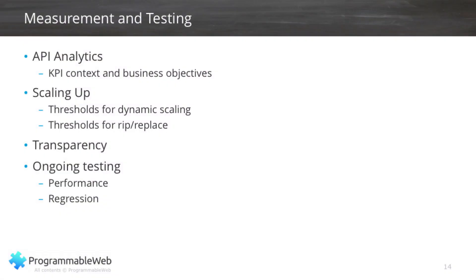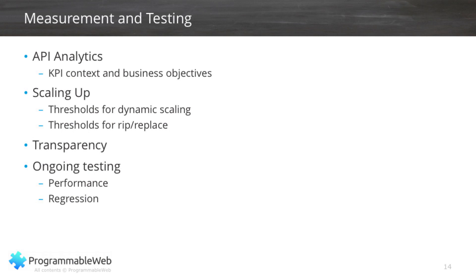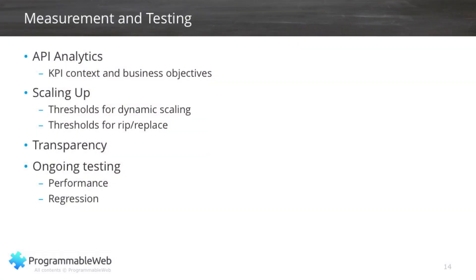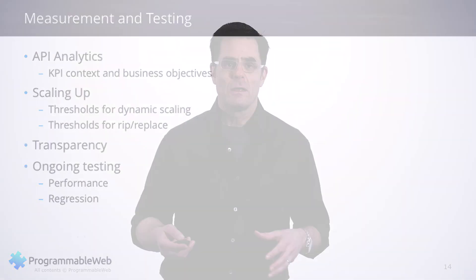Measurement and testing — you really cannot run an API without ongoing measurement and testing. You've identified what success is; now you've got to know if you're achieving it. Key performance indicators and business objectives are the most important things to measure. Scaling up — at what point do you actually scale your API? Whether it's automated through a DevOps API or done by hand, you have to be measuring something to know that point. You also might want to know when you've outrun the capabilities of the underlying systems — at some point that system's not going to be able to scale any further, and it's time to consider ripping and replacing it with something that can better provide the API at scale and performance.